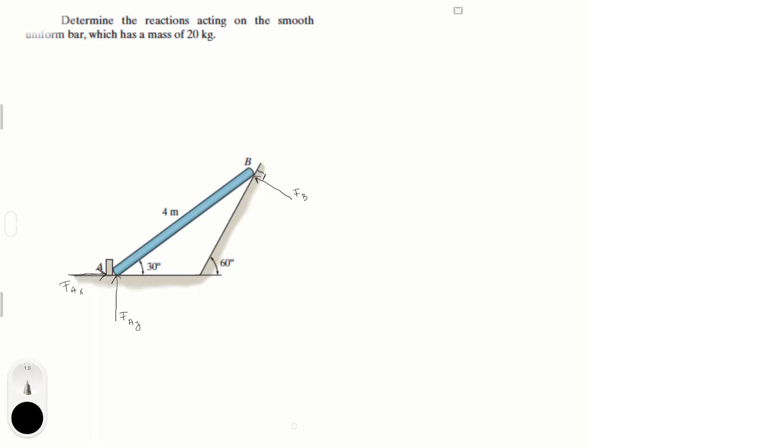We're going to do the sum of the moments at A. Why? Because we have three variables: f_Ax, f_Ay, and f_B. If we do the sum of the moments at B we only get rid of one variable. But if we do sum of the moments at A we get rid of two variables and we can solve for the last one.